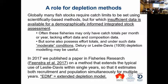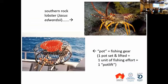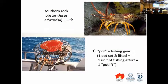The advantage of this method is not only that it doesn't use much data, but that it estimates recruitment and population in all the years for which you have data. The species that the paper was applied to is Southern Rock Lobster.